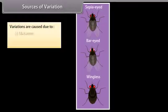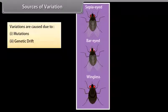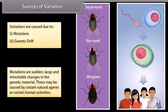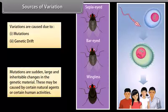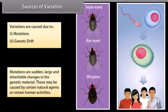Sources of variation: Variations are caused due to mutations and genetic drift. Mutations are sudden, large, and inheritable changes in the genetic material. These may be caused by certain natural agents or certain human activities.